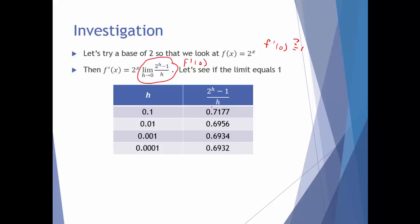A couple of things: this number overall is close to 1, but it's moving in the wrong direction. The closer h gets to 0, the farther away from 1 this gets. It looks like this limit, as h goes to 0, is getting very close to about 0.693 — which is not 1, but kind of close. I only took a look from the right-hand side; the left-hand side shows similar behavior. So we're in a pretty close ballpark using a base of 2.